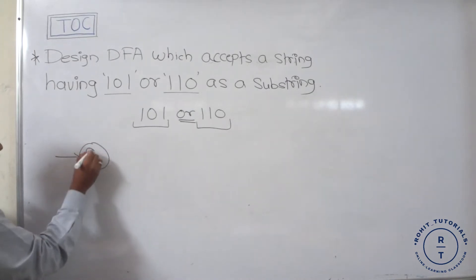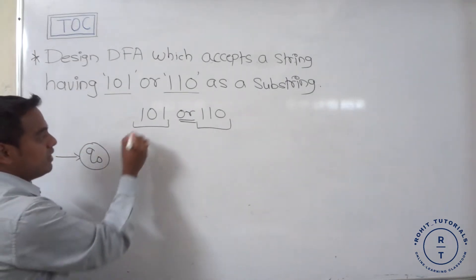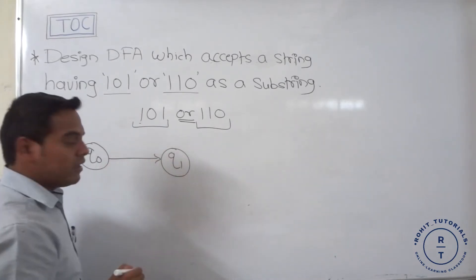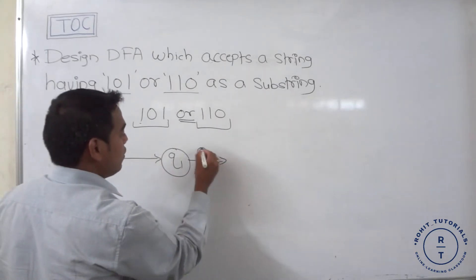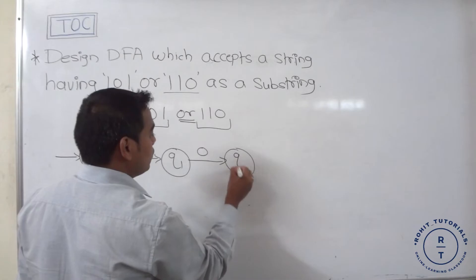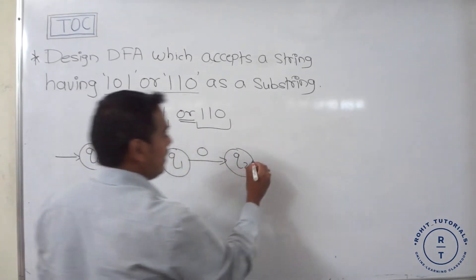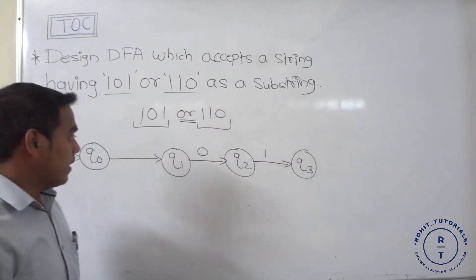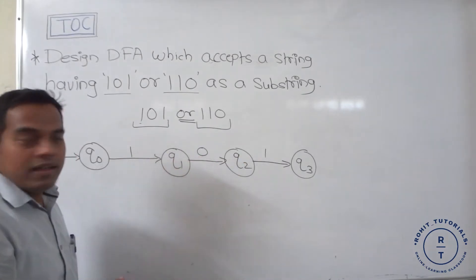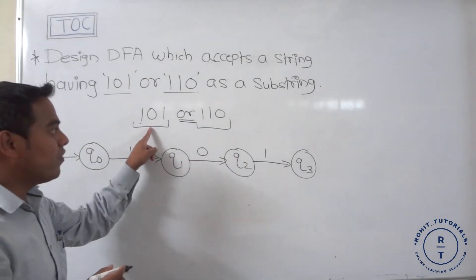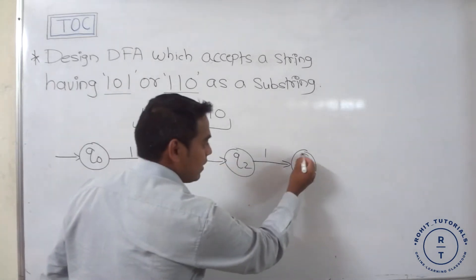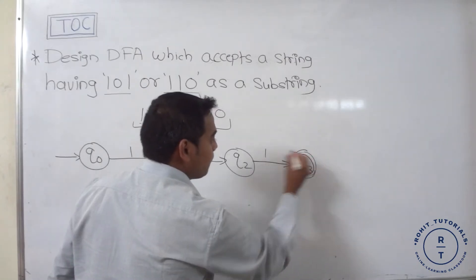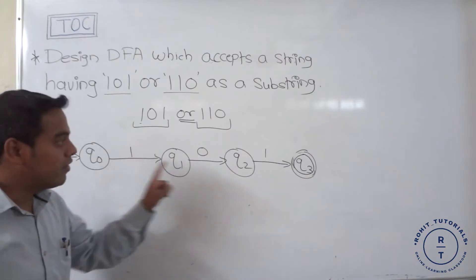We start with the initial state Q0. When at Q0 state, 1 appears, it goes to Q1. At Q1 state, 0 appears, it goes to Q2. At Q2 state, 1 appears — so the sequence is 1, 0, 1 — and we consider Q3 as a final state, because it accepts the minimum string 101.